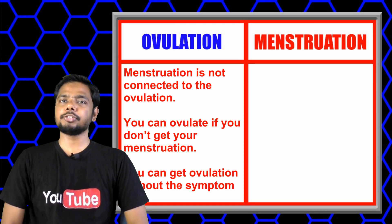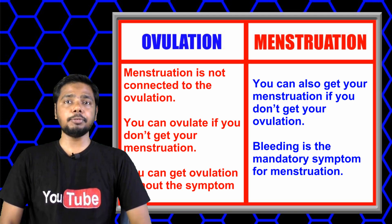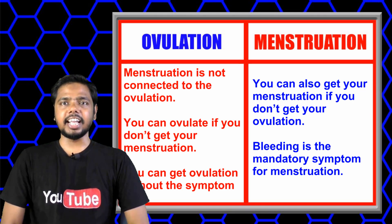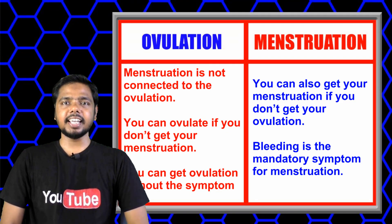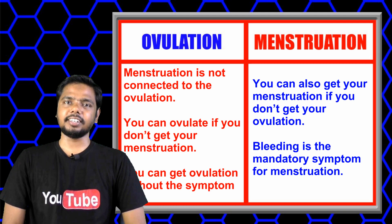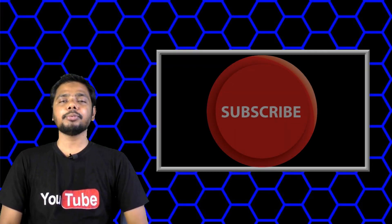Menstruation is not directly connected to ovulation. You can ovulate without getting your menstruation, and you can also get your menstruation without ovulation. On the other hand, you can ovulate without any symptoms, but bleeding is the compulsory symptom for menstruation.